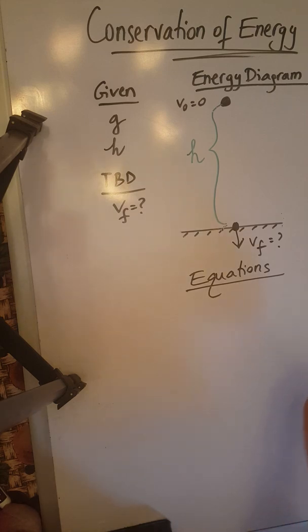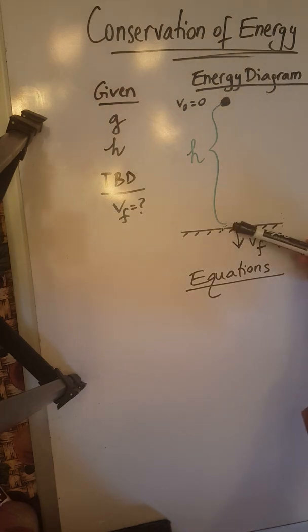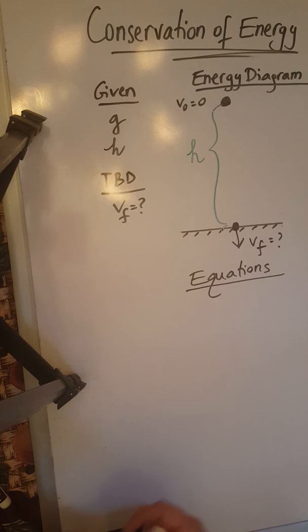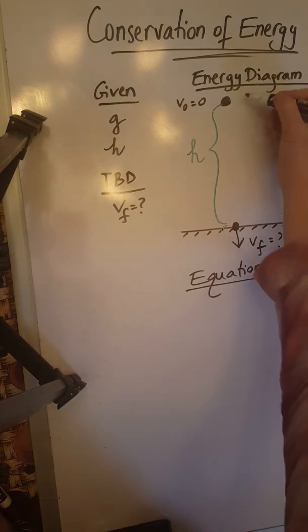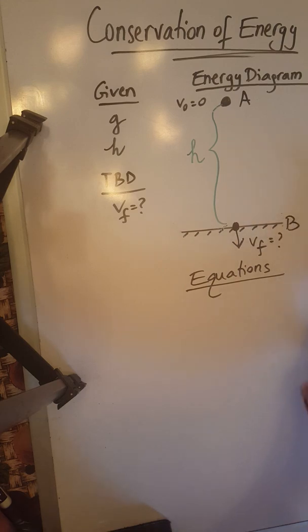So we are going to look at the motion of the object from this point to this point, so therefore the two important points that I'm going to pick and label them A and B will be this point here and the ground over here B.